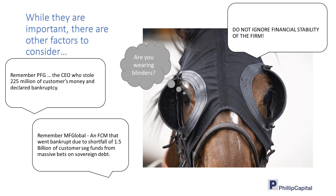This led to a domino effect that caused the downfall of the firm and they had to declare bankruptcy. The aftermath of these events resulted in tightening by regulators — more frequent reporting, risk monitoring, and rules regarding segregated funds — all done for the purpose of protecting customers. But are you really protected? As a trader, you don't want to be wearing blinkers. You need to find out more and think more carefully when choosing an FCM, because it matters greatly.